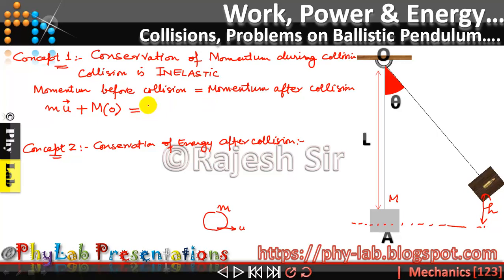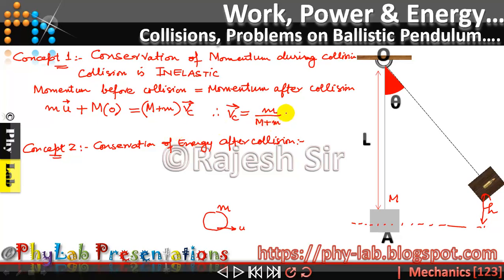Momentum before collision must equal momentum after collision. After collision, they became one single entity of mass M plus m — where M is the mass of the block and m is the mass of the bullet — moving with a common velocity Vc. Using this equation, I get Vc = (m / (M + m)) × u. Let me call this the first equation in solving such numerical problems.